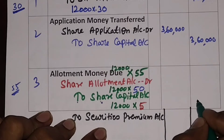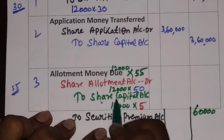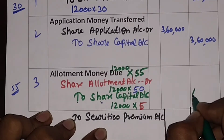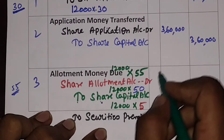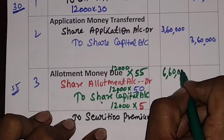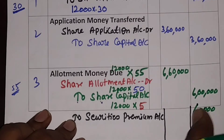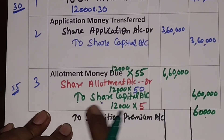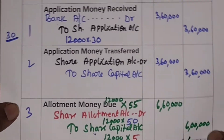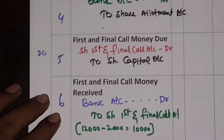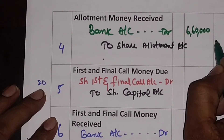12,000 into 50 gives Rs. 6,00,000 for share capital. Securities premium is 12,000 into 5, which gives Rs. 60,000. Total: Rs. 6,00,000 plus Rs. 60,000 equals Rs. 6,60,000. So on allotment, Rs. 6,60,000 is due. The journal entry is: Share Allotment Account debit, to Share Capital Account, to Securities Premium Account. The allotment money received is also Rs. 6,60,000.